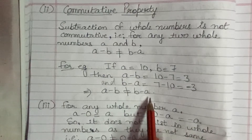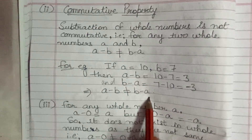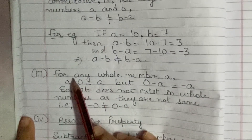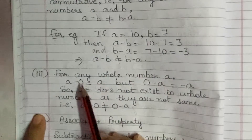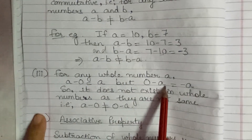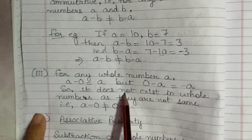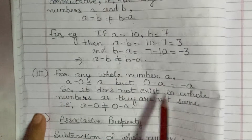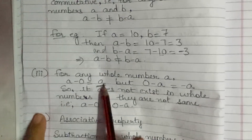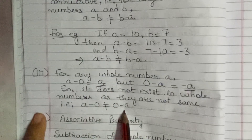The third property says that for any whole number A, A minus 0 is equals to A, but 0 minus A is equals to minus A. So this property also does not exist in whole numbers as they are not the same, because A minus 0 is not equals to 0 minus A.